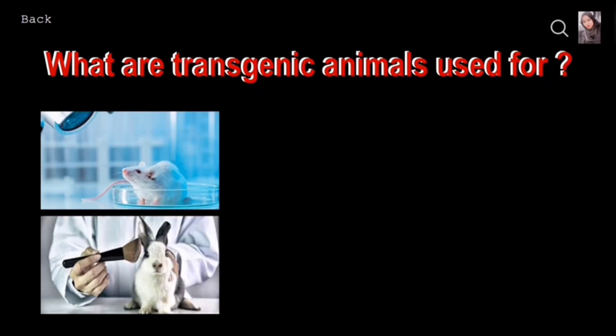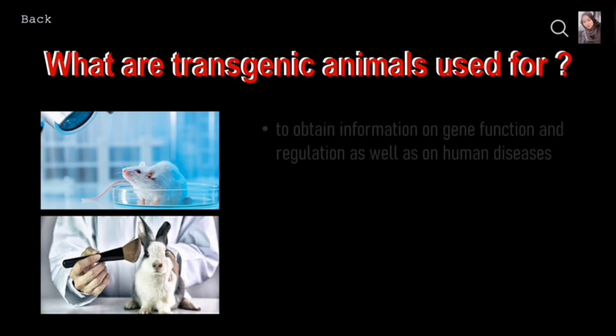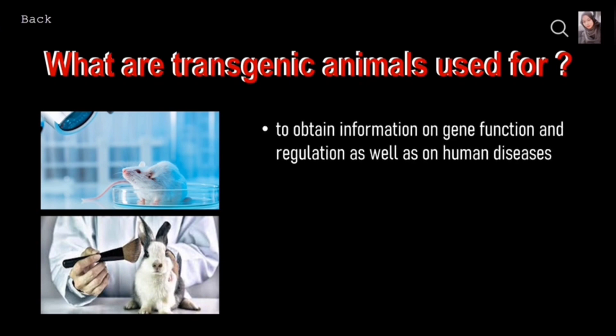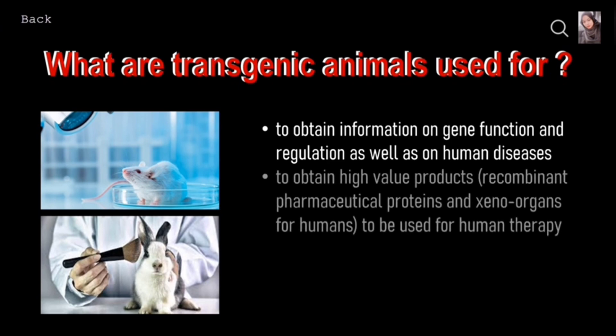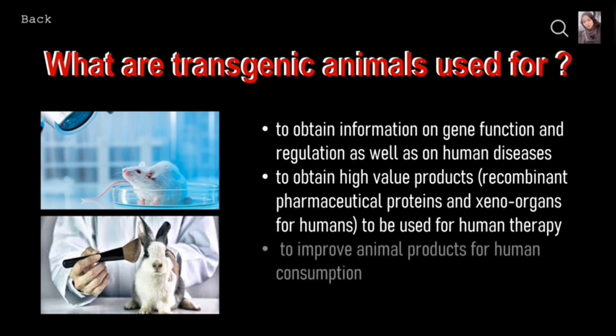What are transgenic animals used for? Applications of animal transgenesis may be divided into three major categories: first, to obtain information on gene function and regulation as well as on human disease; second, to obtain high-value products to be used for human therapy; third, to improve animal products for human consumption.